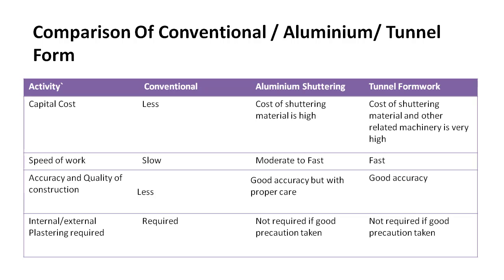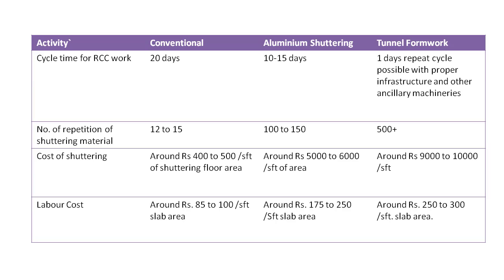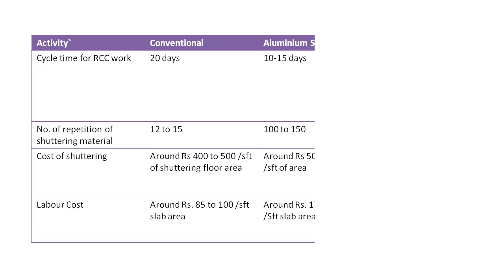Comparison of Tunnel Formwork System with other types of Formwork System: the capital cost of Tunnel Formwork is very high, but the speed of work is very fast and we get very good accuracy in construction. We do not need any type of plastering work in Tunnel Formwork System. Cycle time lies between 1–3 days, number of repetitions of shuttering material is more than 500, cost of shuttering is around 9,000–10,000 per square feet, and labor cost is around 250–300 per square feet slab area.